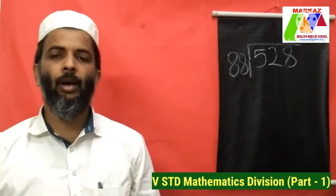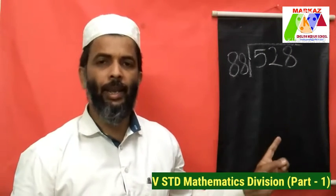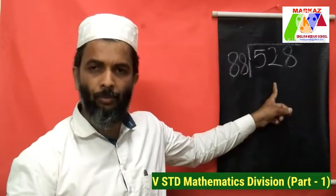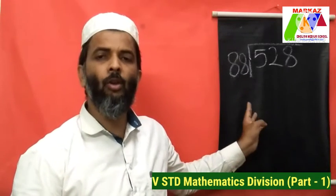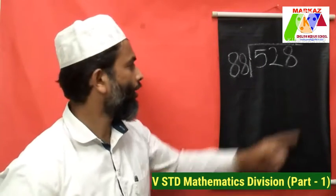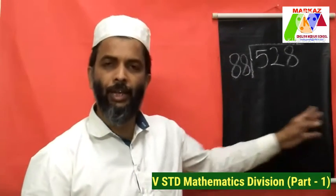Now let's have a look at one more problem. Divide 528 by 88. It also has a 2-digit divisor, so we will start the same way — with 2 digits, asking how many 88s will make 52. But even though both are 2 digits, this won't work because 88 is already greater than 52. That means we are going to have to take all 3 digits of the dividend — 528 divided by 88 — and group the first 3 digits together.